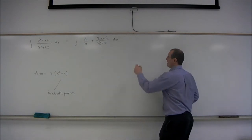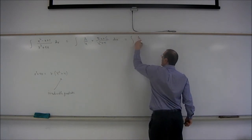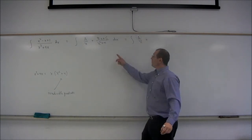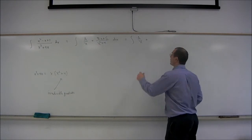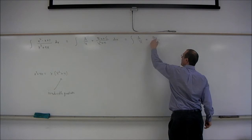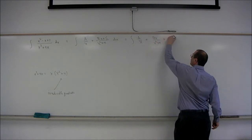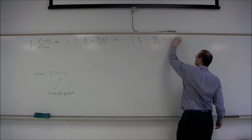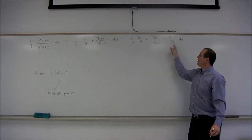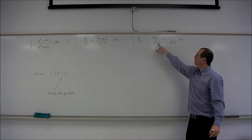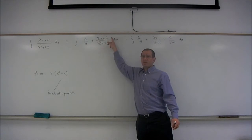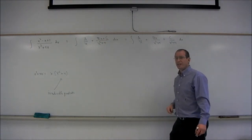Now to integrate this, A over x is going to be easy. But this second fraction requires a little bit of work. First we break it into two more fractions by simply breaking it at the summation. So the integral will have three terms: Bx over x squared plus 4, and C over x squared plus 4. It splits at the plus sign.